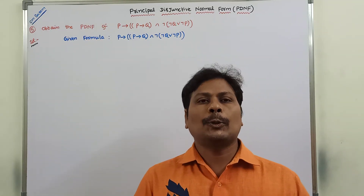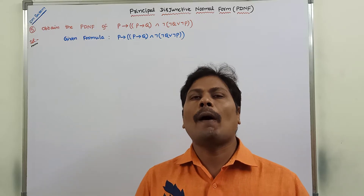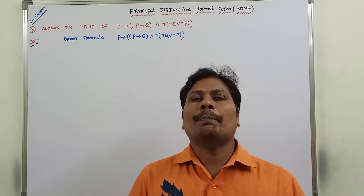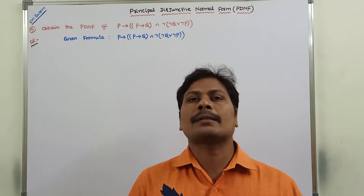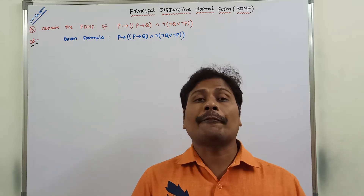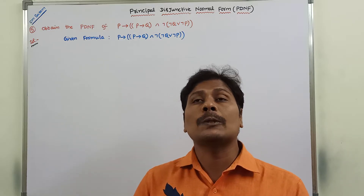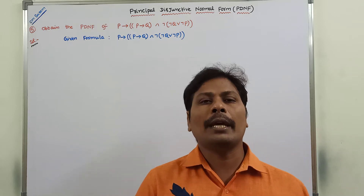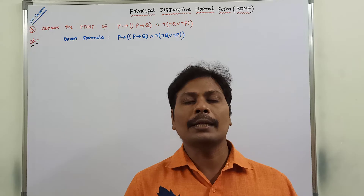Hi friends, today I am giving a lecture on an example problem on PDNF, that is Principal Disjunctive Normal Form. In the previous videos, we already solved four example problems on PDNF with or without using a truth table. Please refer to those videos for a better understanding. Now in this video, we have to solve one example problem on PDNF without using a truth table.